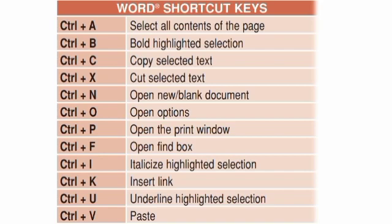CTRL+U. CTRL+U is used for underline highlighted selection. First we select the text, and then if we want to underline that portion, we use CTRL+U. MS Word میں highlighted text کو underline کرنے کے لیے CTRL+U کا استعمال ہوتا ہے۔